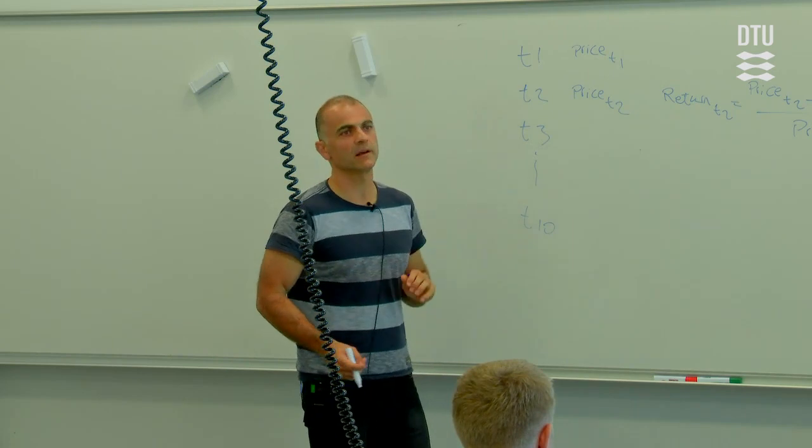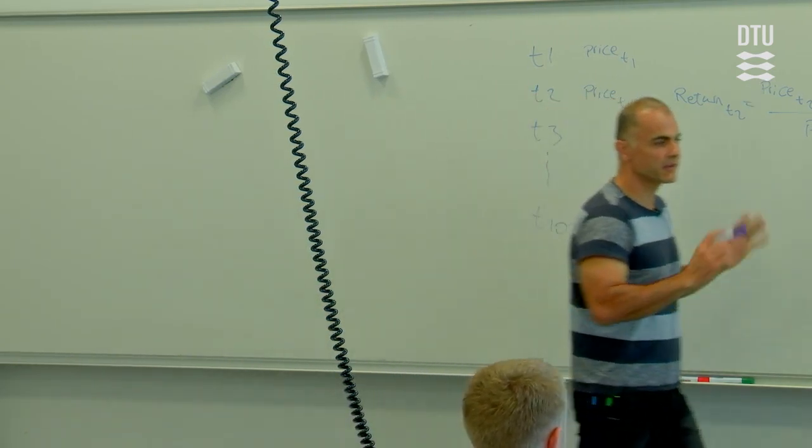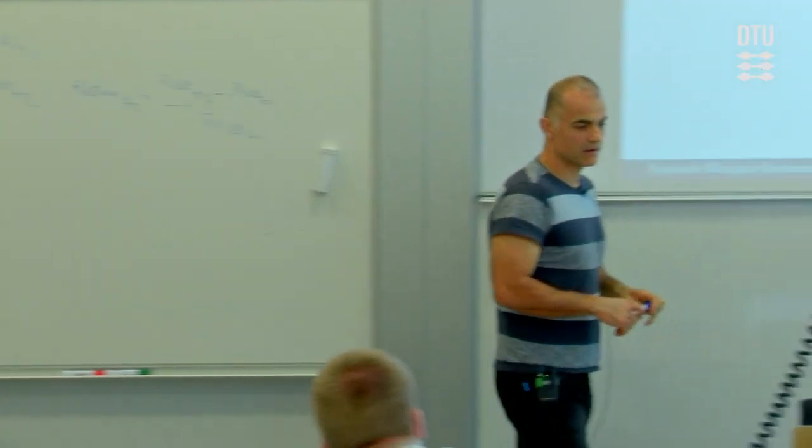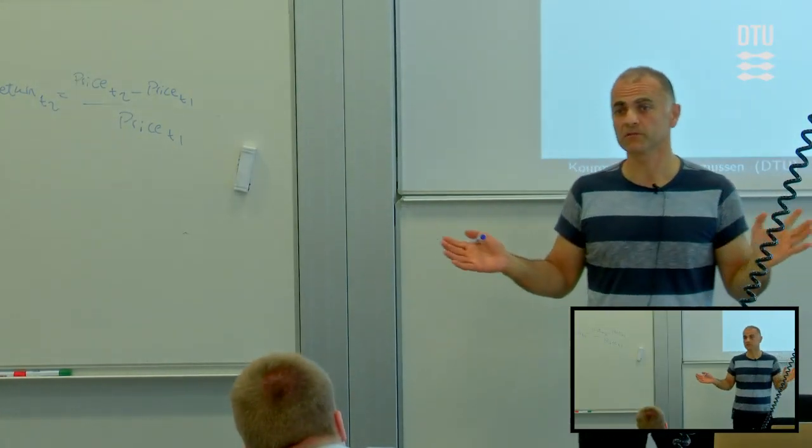And you see if I have ten points, then I get ten observations, historical steps. Then I get nine returns, that's why I divide by T minus one, T being the number of observations of prices that I have. So pretty simple, basic math, just for calculating the returns from historically observed prices.